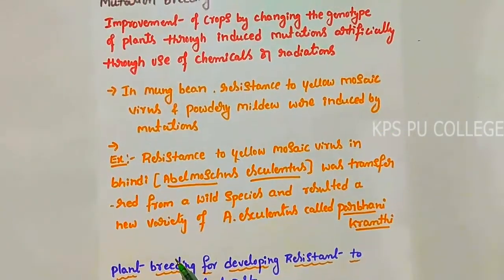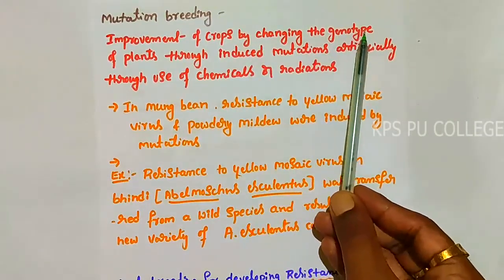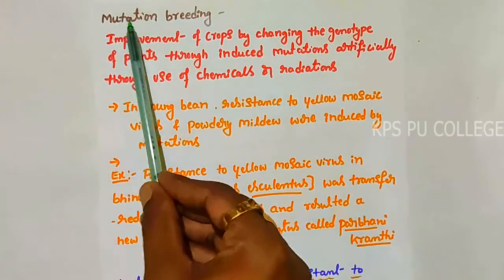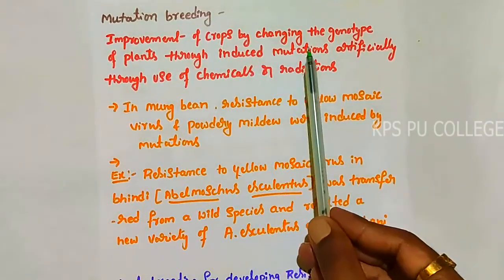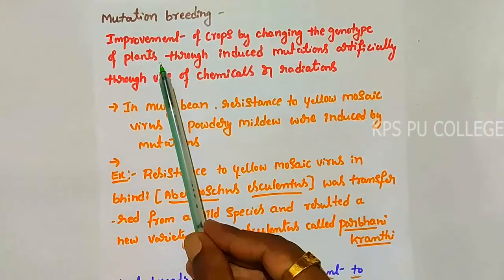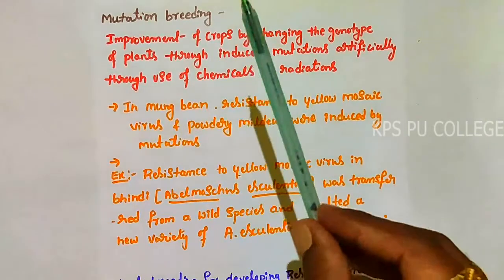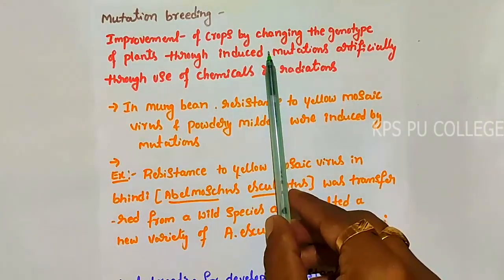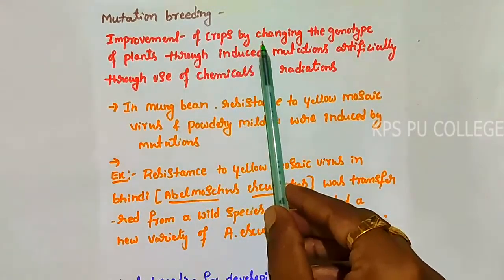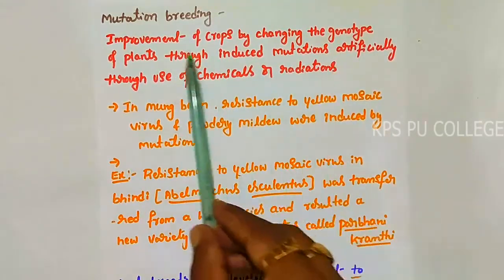The next concept is mutation breeding. Mutation breeding means improvement of crops by changing the genotype of plants through induced mutation artificially, through use of chemicals or radiations. Using chemicals or radiation to cause mutation changes the plant's genotype, leading to crop improvement. This process is called mutation breeding.